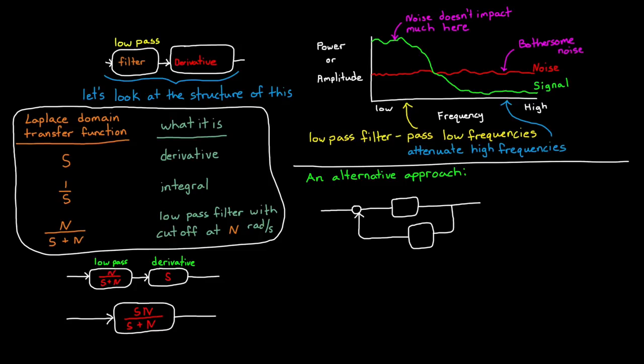Instead of a low pass filter in series with a derivative, we can create a feedback loop with n in the forward path and an integral in the feedback path. This might not look like the same logic, but we can reduce this block diagram to a single transfer function.